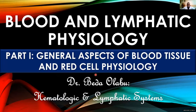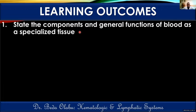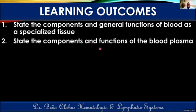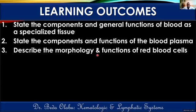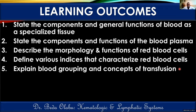Welcome to part one of the lecture series, focusing on general aspects of blood tissue and the physiology of red blood cells. In this lecture we will look at the components and general functions of blood tissue — blood is a specialized connective tissue. We will then look at the components and function of plasma, which is the fluid component of blood. We will also look at the morphology and functions of red blood cells, and define indices used to characterize them. After that we will look at the concept of blood grouping.